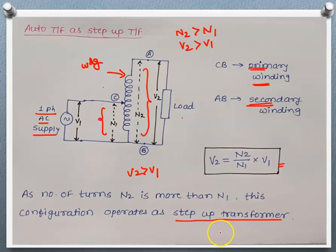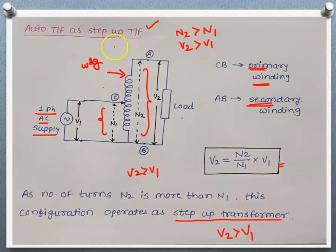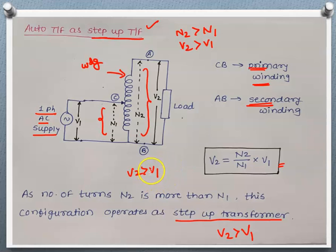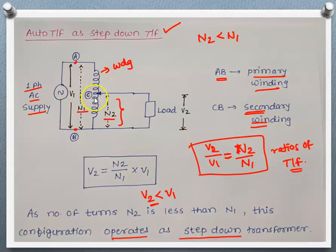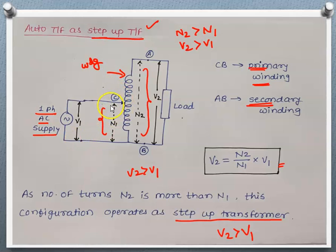In a step-up transformer we get high voltage at the load side compared to the primary side, and this configuration achieves that. So the same autotransformer can be used as either a step-down or step-up transformer by simply changing the load and supply connections. This flexibility is the specialty of this transformer.